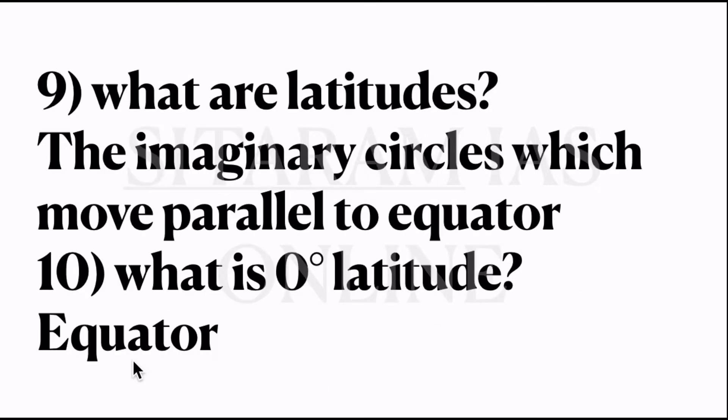Ninth question: what are latitudes? Latitudes are the imaginary circles which move parallel to the equator. And tenth question: what is zero degree latitude? Zero degree latitude is the equator. It divides the earth into two equal halves. Above the equator is the northern hemisphere and below the equator is the southern hemisphere.